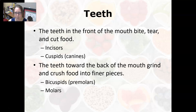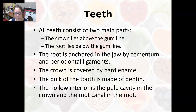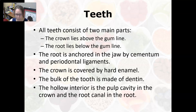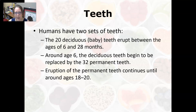The teeth at the front of the mouth — incisors and cuspids — bite, tear, and cut food. The teeth toward the back — bicuspids or premolars and molars — grind and crush food into finer pieces. All teeth consist of two main parts: the crown, which lies above the gum line, and the root, which anchors it into the bone via cementum and periodontal ligaments. The crown is covered by hard enamel, the bulk of the tooth is made of dentin, and the hollow interior is the pulp cavity.